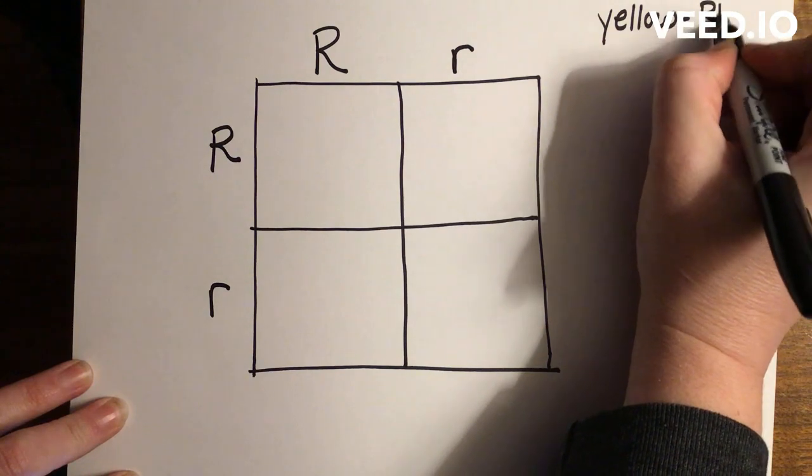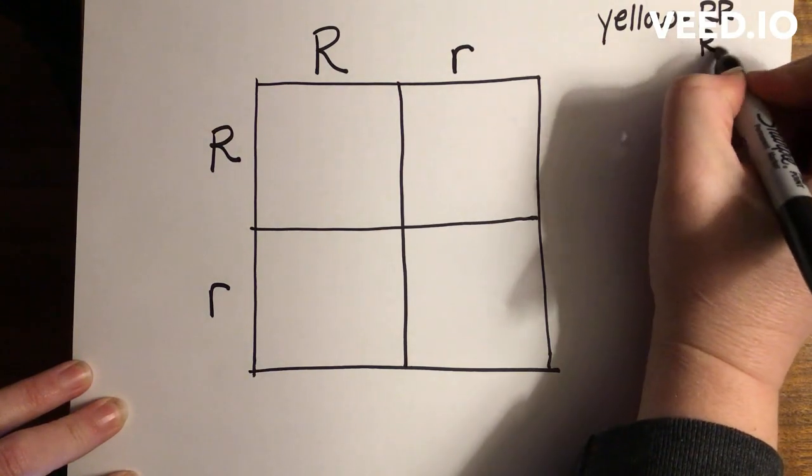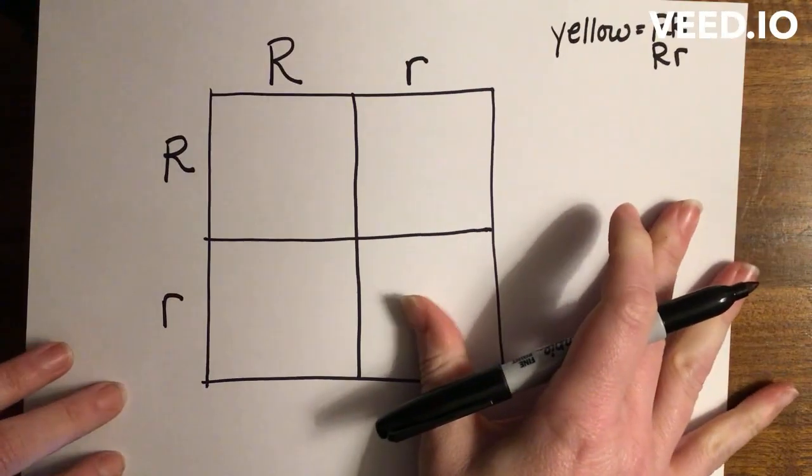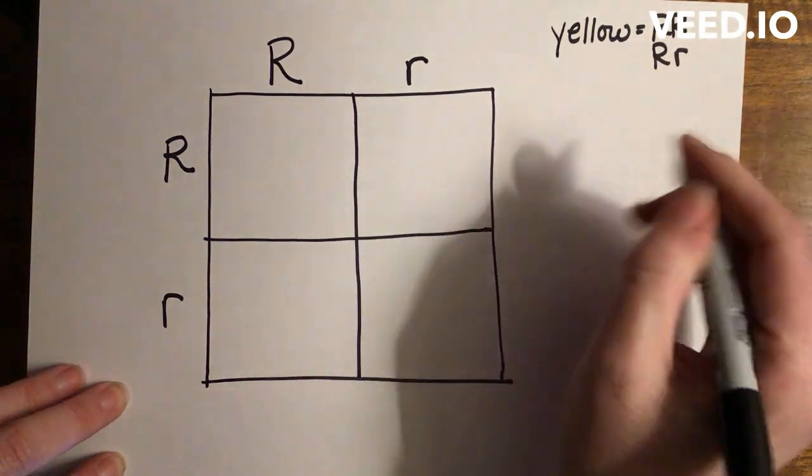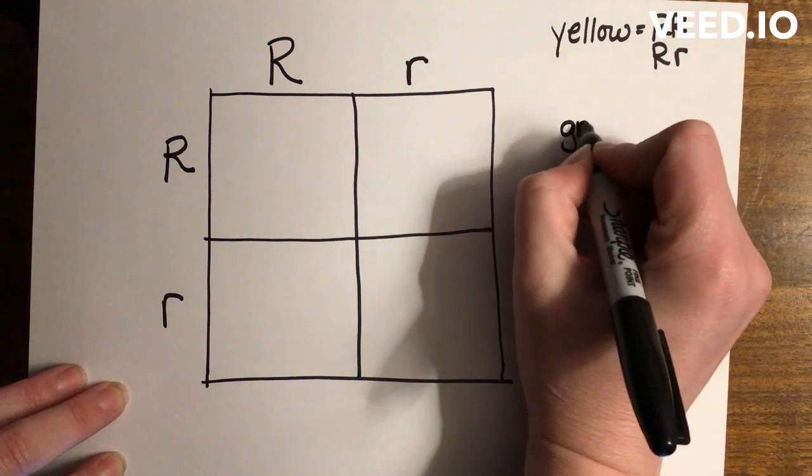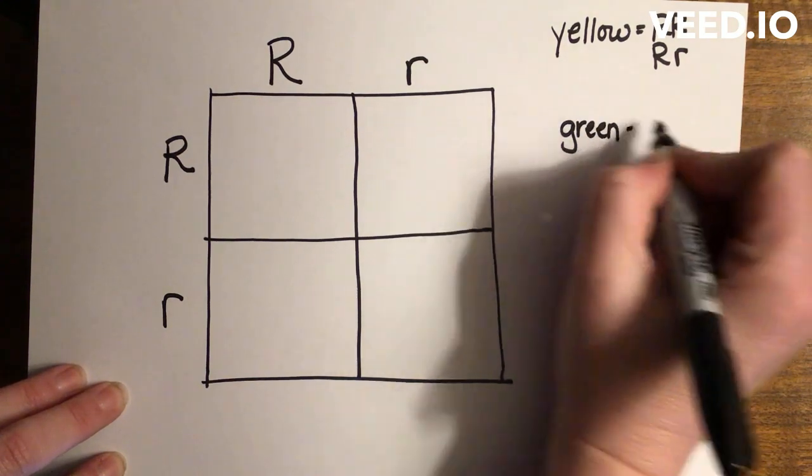So yellow, because this is complete dominance, could be this or this—it could either be homozygous dominant or heterozygous. We're saying green is the recessive, so green can only be homozygous recessive.